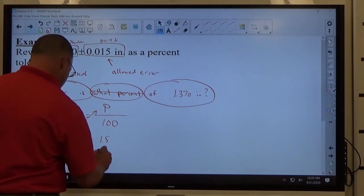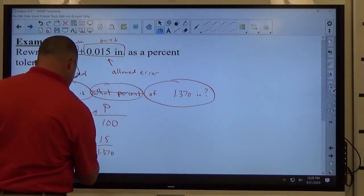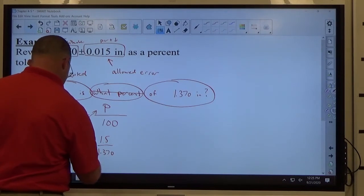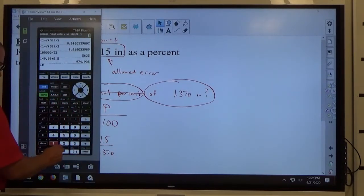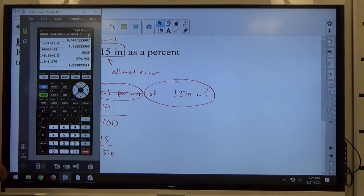Divide both sides by 1.370. We get 1.09 percent. Let's go with 1.1 percent, rounded to the nearest tenth.